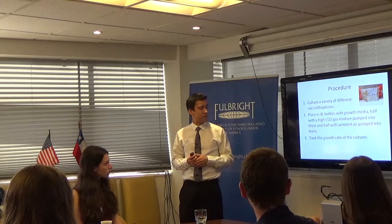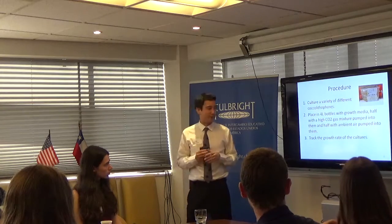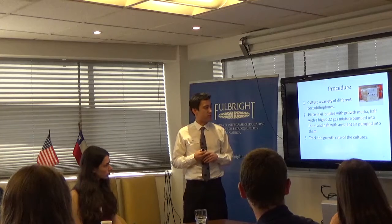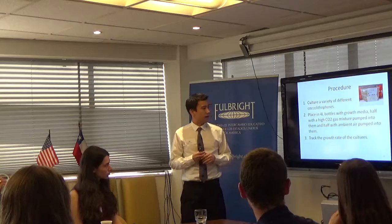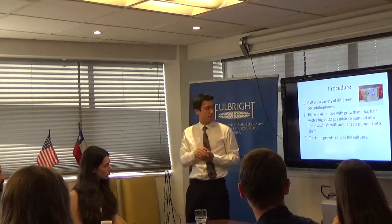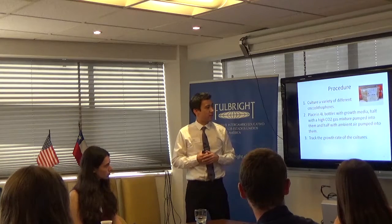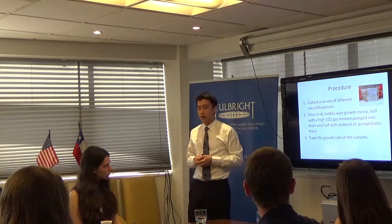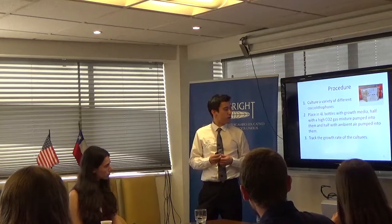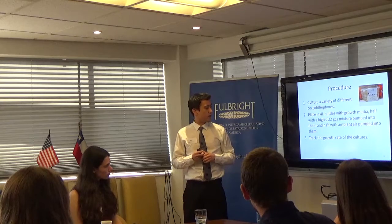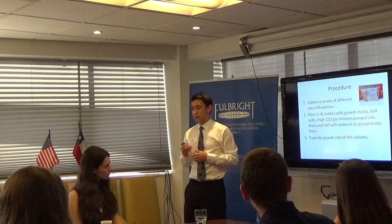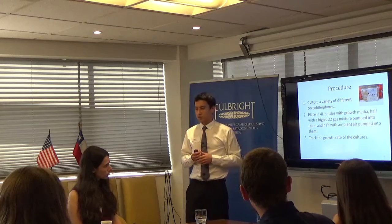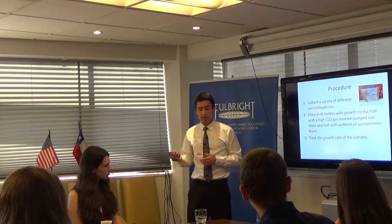So what did we do? I very simplified it — this is about the most simple I could get. The first thing I did was culture a variety of different coccolithophores: six different species, about 12 different strains. We grew them in these little vials stacked on top of each other. Then I transported them to a new location where we grew them in four-liter bottles with growth media. We then created experimental conditions with half CO2 and half normal atmospheric air, and measured the growth rate to determine what conditions were causing higher or lower growth.